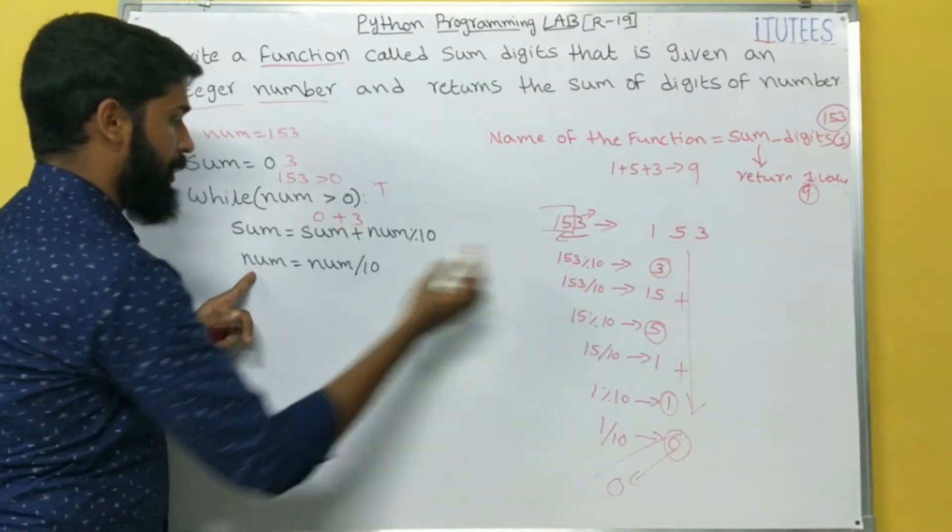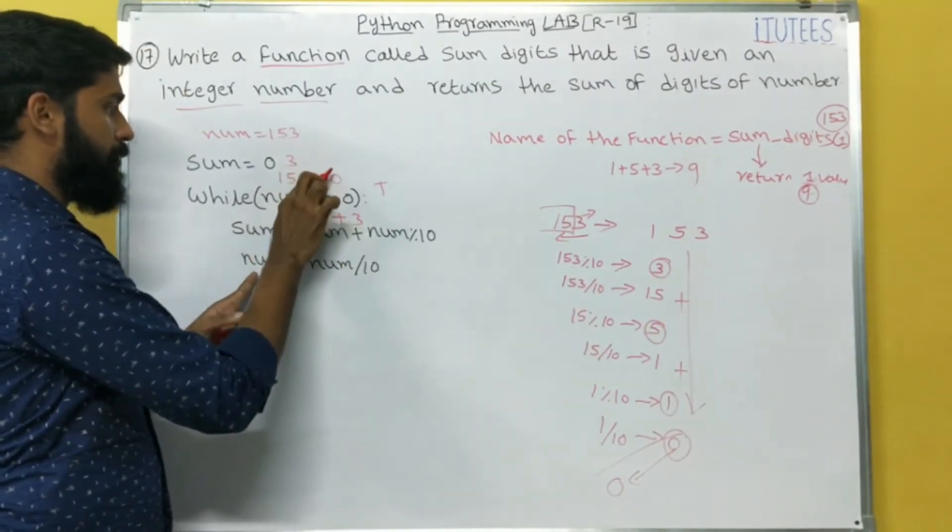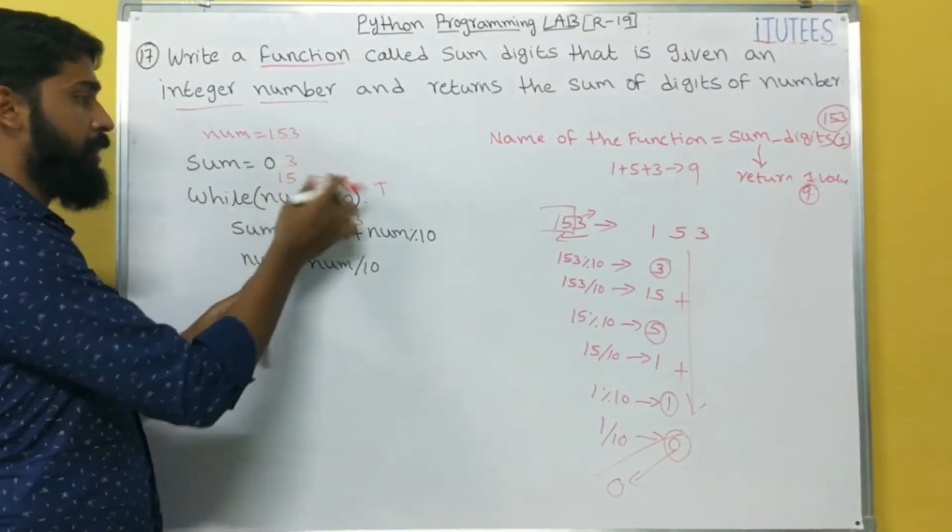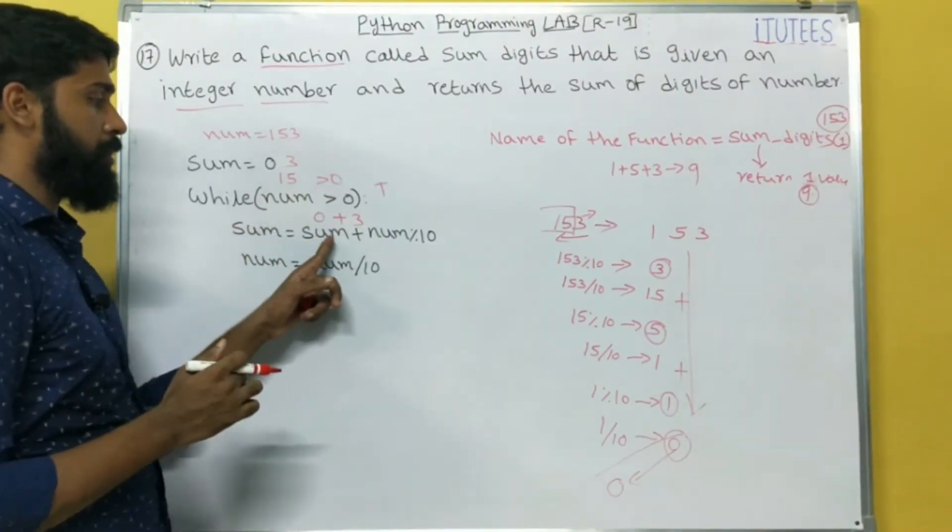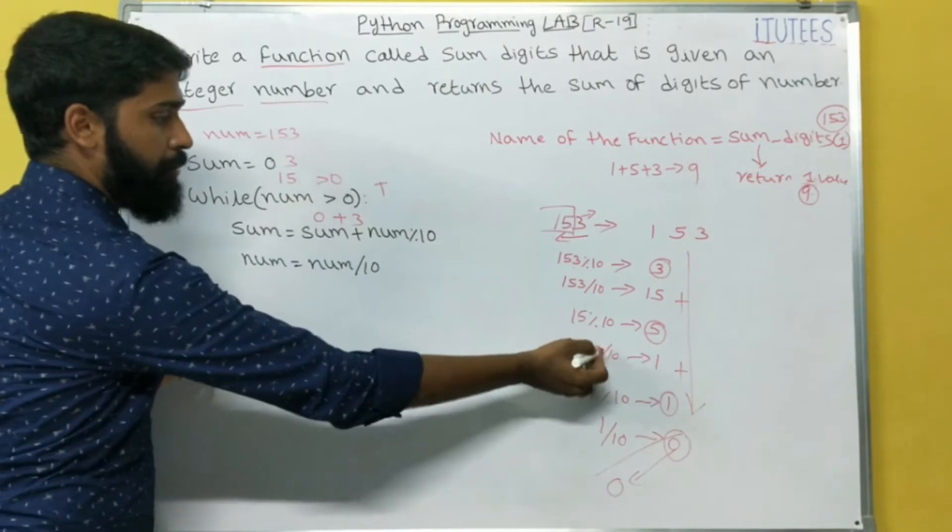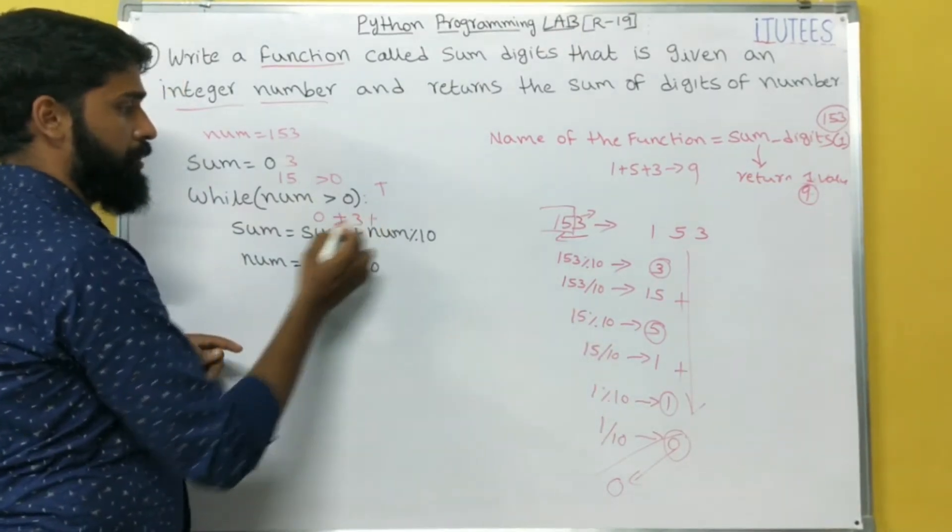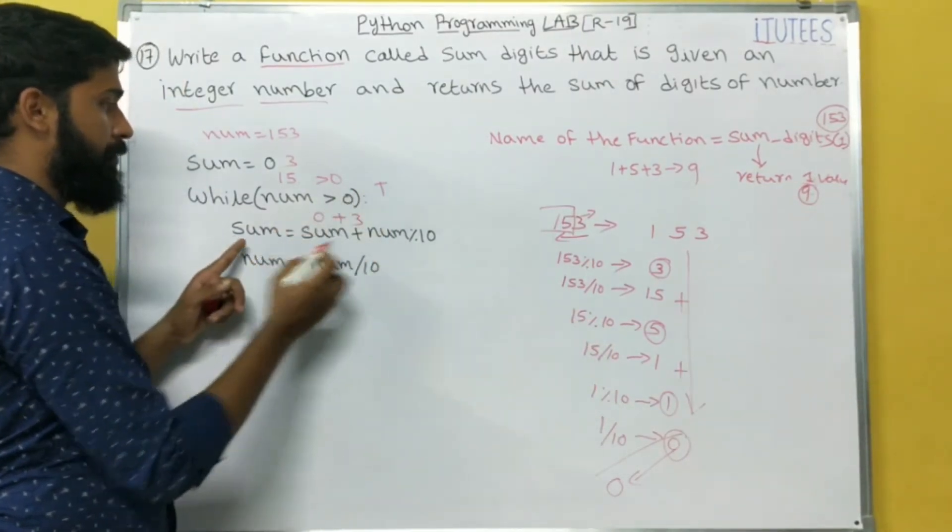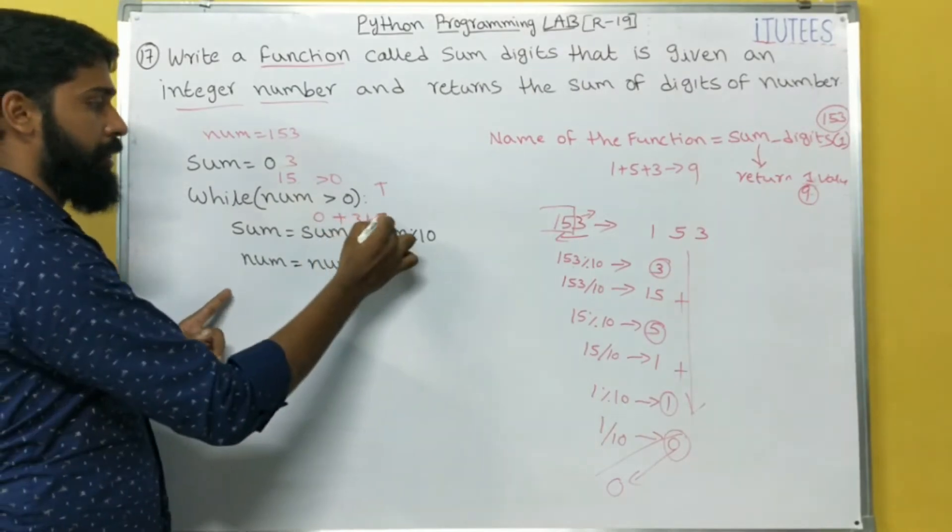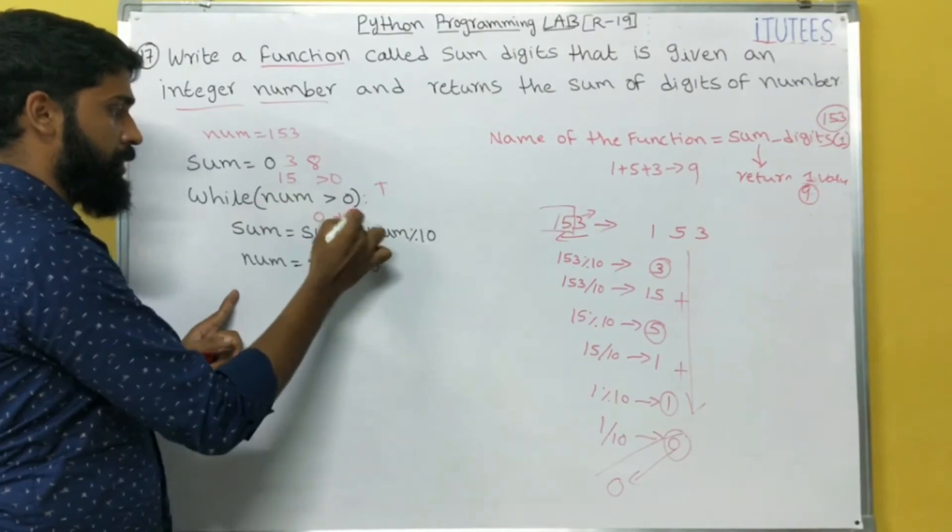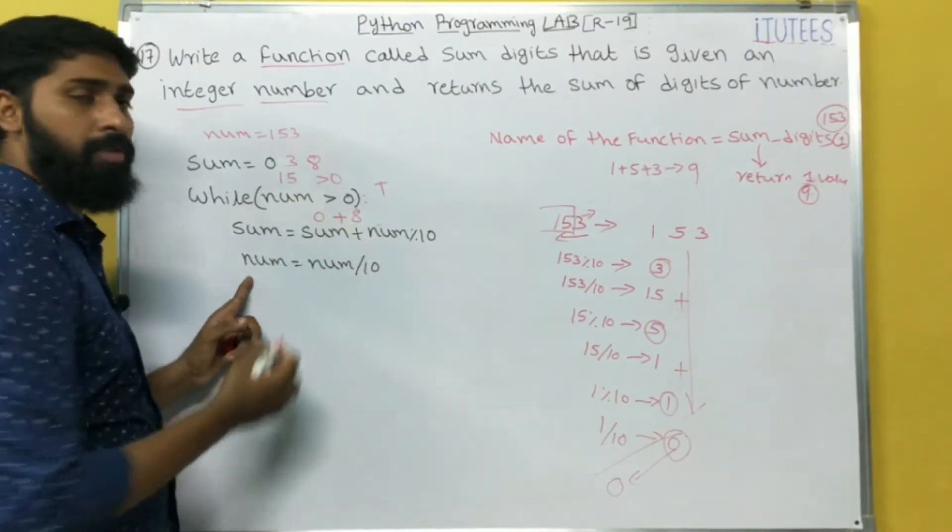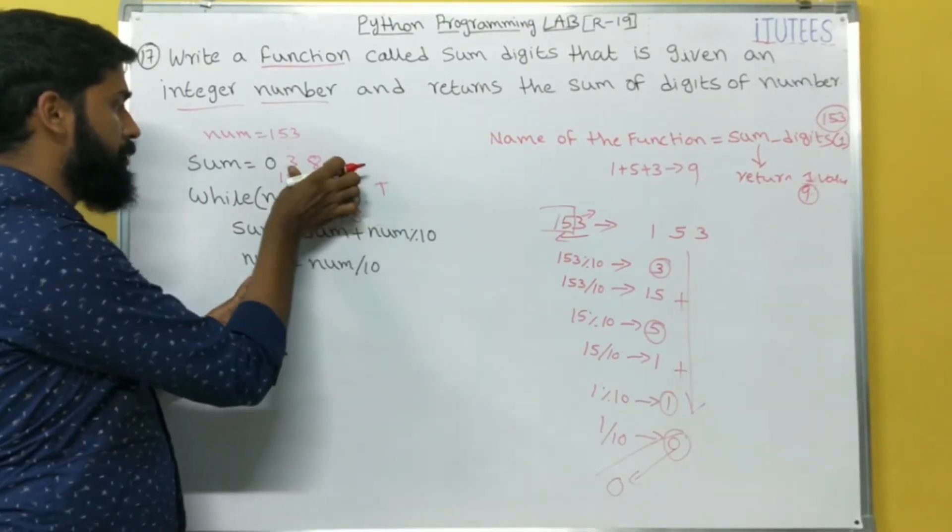And num equals to num by 10. That means, now, the num value equals to 15. 153 greater than 0. True. Enter into this. Sum equals to 3 plus 15 by 10. That means, 1. Sorry. 15 percentage 10. That means, 5. That means, 8. This is 8. And num equals to num by 10. That means, it is 1.